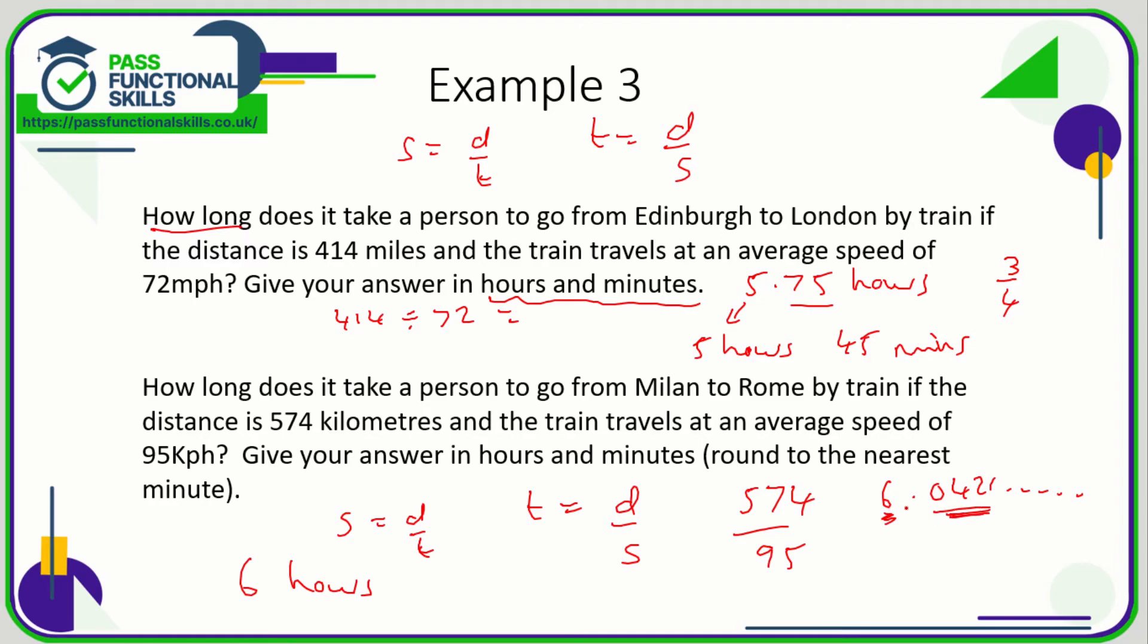So if we just take away the six from this, let's get rid of the six full hours. So now we've got 0.0421 dot dot dot on our calculator. Now to turn this into minutes, all we need to do is just multiply this by 60. And if you multiply that by 60, you get 2.52 minutes. So to the nearest minute, that's going to round up to three minutes. Therefore, the journey time is six hours and three minutes.